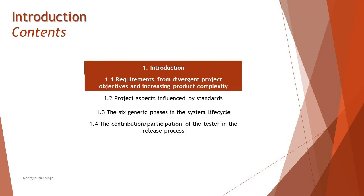As part of this chapter we will be understanding topics like requirements from divergent product objectives and increasing product complexity from time to time. Then 1.2: project aspects influenced by standards. 1.3: the six generic phases in the system life cycle. 1.4: the contribution and participation of testers in the release process of an automotive project. Today we will be covering the first basic introduction and the requirements from divergent project objectives and increasing product complexity.